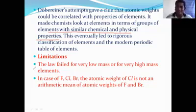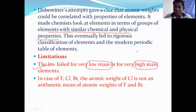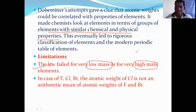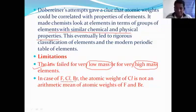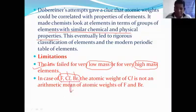There are some drawbacks to Döbereiner's triads. The first limitation: this law fails to explain elements of low mass and high mass, such as hydrogen and helium. For example, taking fluorine, chlorine, and bromine — the atomic weights are 9, 17, and 36 respectively. The mean of the central element chlorine is not exactly the average of fluorine and bromine. This is the first drawback of Döbereiner's triads.